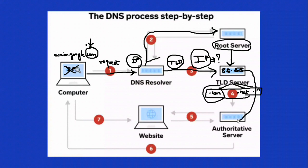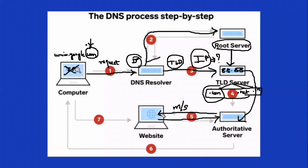It will hand off to the authoritative name server to figure out if the address is correct or not. The authoritative name server sends a message to the address and waits for the response. A message is sent to ensure if 8.8.8.8 is correct or not, and then once it gets the right response confirming that 8.8.8.8 is the correct IP address to reach www.google.com, that means the IP address is correct.